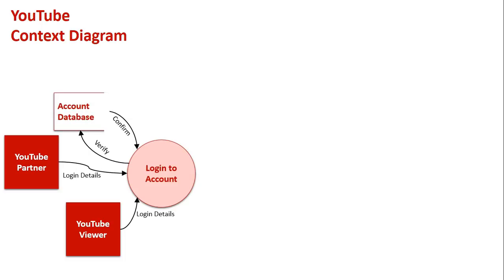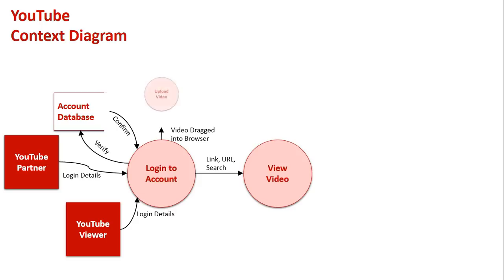The login is then verified against an account database, which distinguishes the partners from the viewers - who has a monetized account and who doesn't. After confirmation, the first most basic step YouTube does is give you access to view videos. This is through links, through URLs, or through doing searches through YouTube's search engine. Users can find videos and view them - primarily what most people use YouTube for.